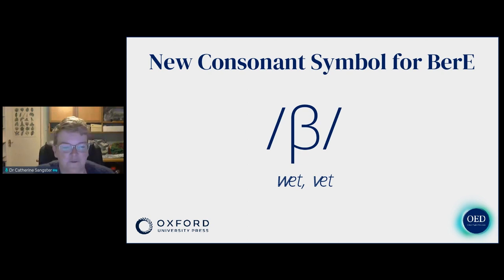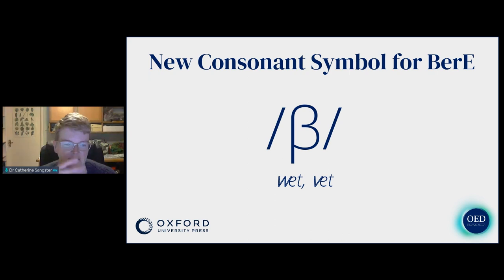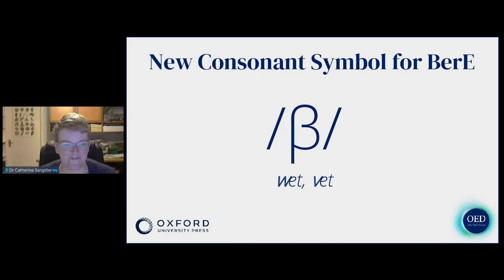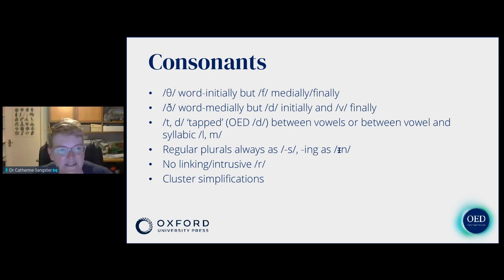We have a third new symbol, now moving from vowels to consonants. This symbol represents probably the most salient feature of all of Bermudian English: the use of this merged bilabial fricative. For words like wet and vet, it's quite a complex merger, and it's really relevant to what Rosie is going to talk about shortly around dialect parody. For dental fricatives — the TH sound — it becomes TH medially and finally, and the voiced TH in the middle of words can become a stop D initially and V in final position.